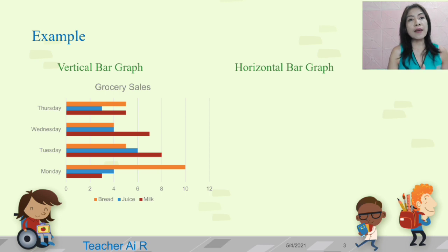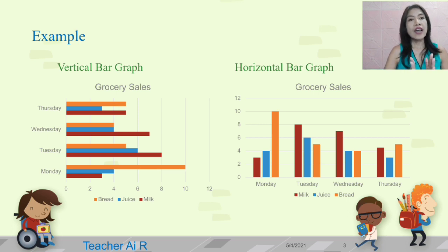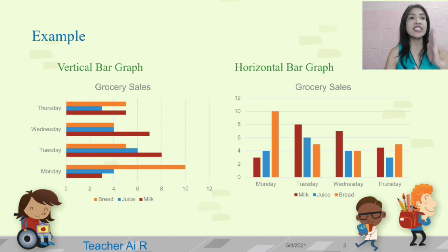The next example is the horizontal bar graph. So, this is the example of horizontal bar graph. The orientation of the bars is now in a standing line.